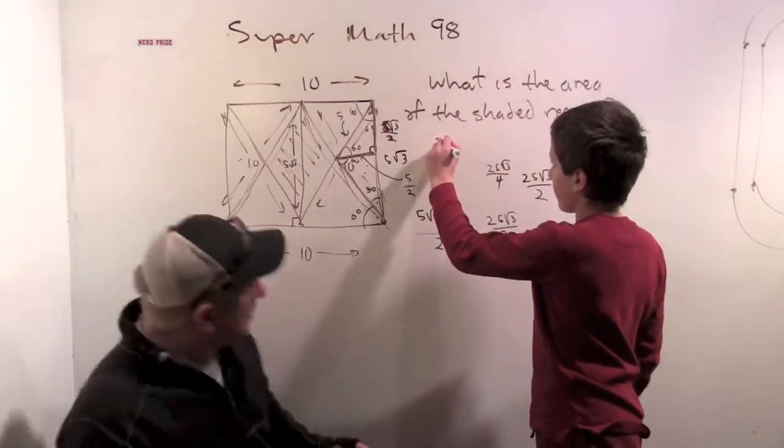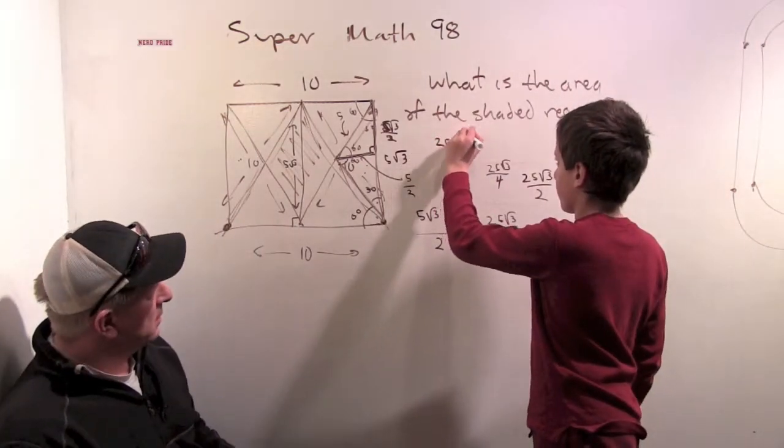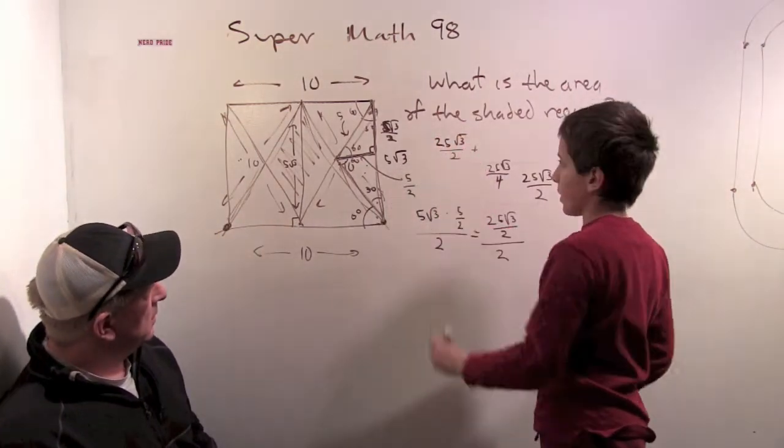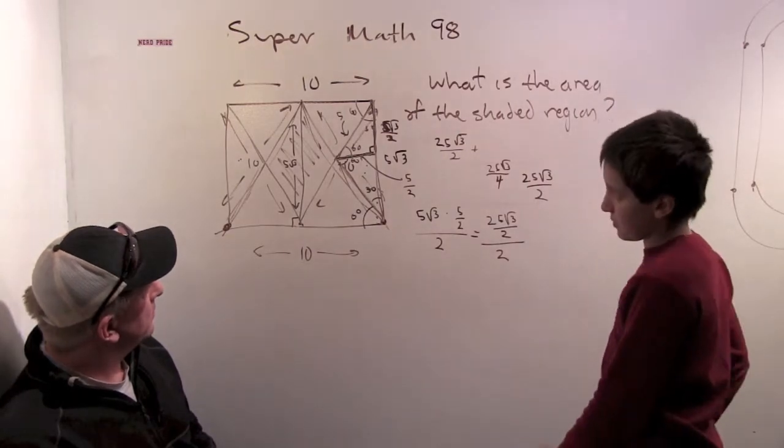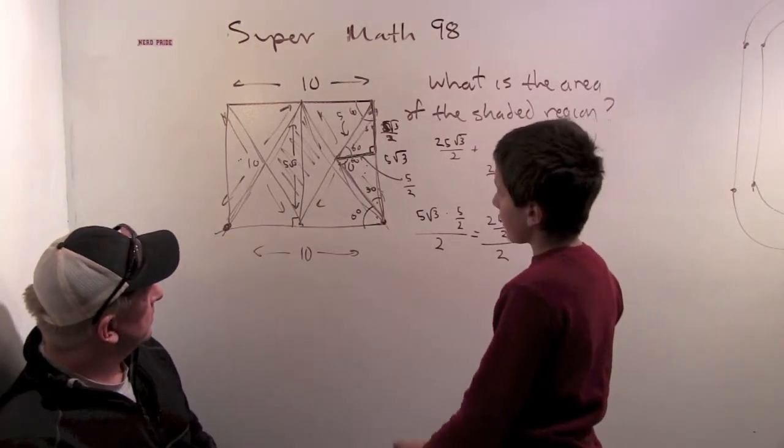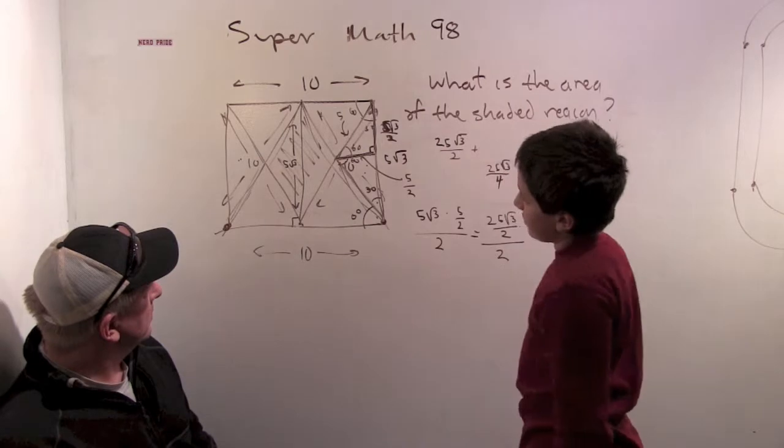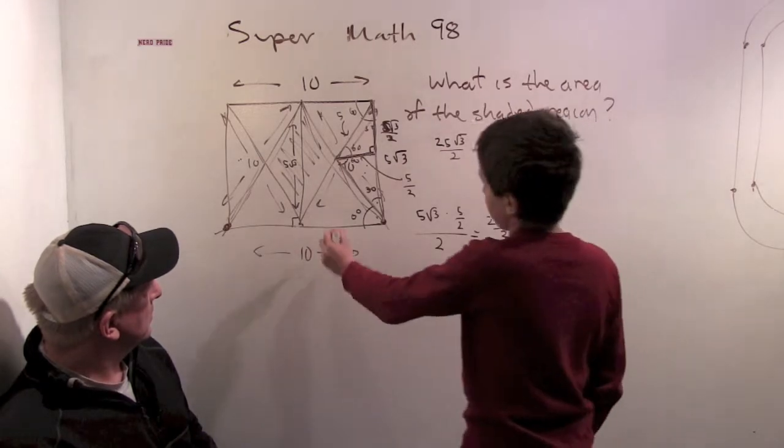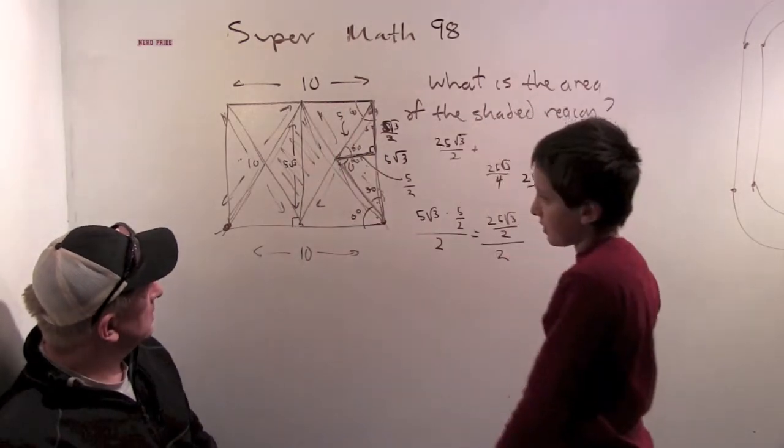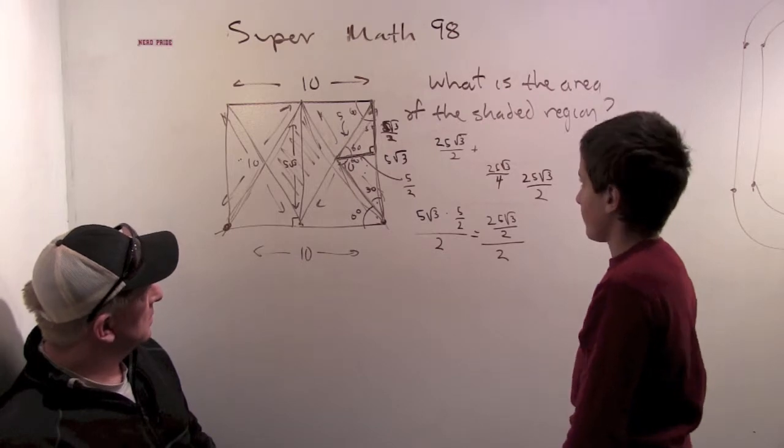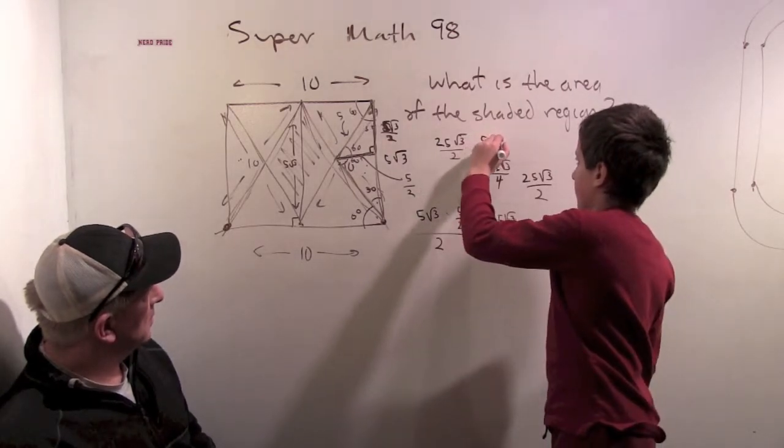So, 25 root 3, or root 2 plus... well, the area of one of these equilateral triangles is 25 times the square root 3, because the height is 5 root 3 and the base is 10. And there's two of them, so 50 root 3.